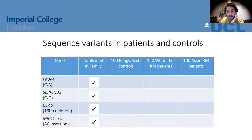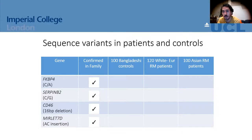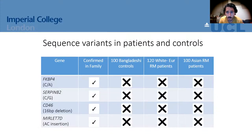We confirmed these four variants in the patient, but of course you cannot draw conclusions from just one patient. So we sequenced these variants in a bigger cohort: 120 White European recurrent miscarriage patients, 100 Asian patients from Bangladesh, Pakistan and India, and 100 Bangladeshi controls — females who had at least one successful pregnancy. When we sequenced this cohort, we couldn't identify any of these variants in either the controls or the recurrent miscarriage patients.